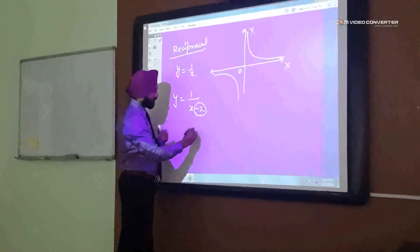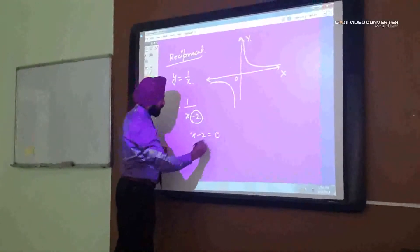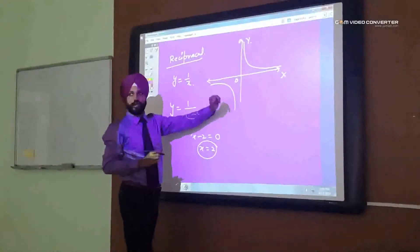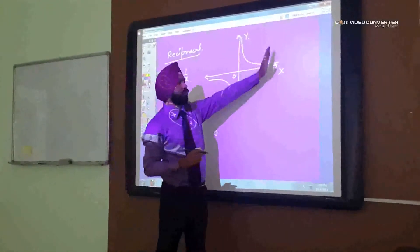Because, x minus 2, if it is 0, so x becomes 2 then. Not 0. Okay? So, this line will shift on that side.